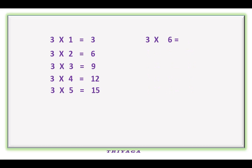3 6s are 18, 3 7s are 21, 3 8s are 24, 3 9s are 27, 3 10s are 30.